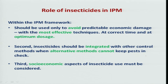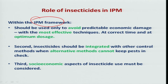Knowing all these things, even today, particularly in tropical and subtropical conditions, because of insect population outbreaks, we need to include insecticides in the IPM. We need to observe a definite framework. In my opinion, it should be used only to avoid predictable economic damage, and whenever the other control measures are not working, then only we need to go for insecticide application in the IPM strategy.